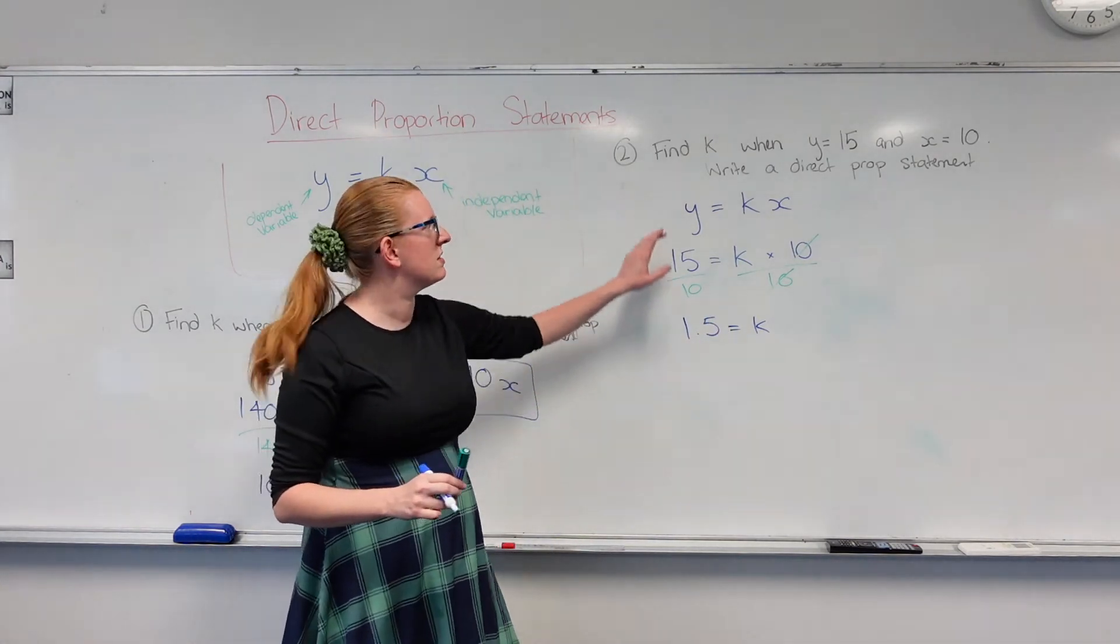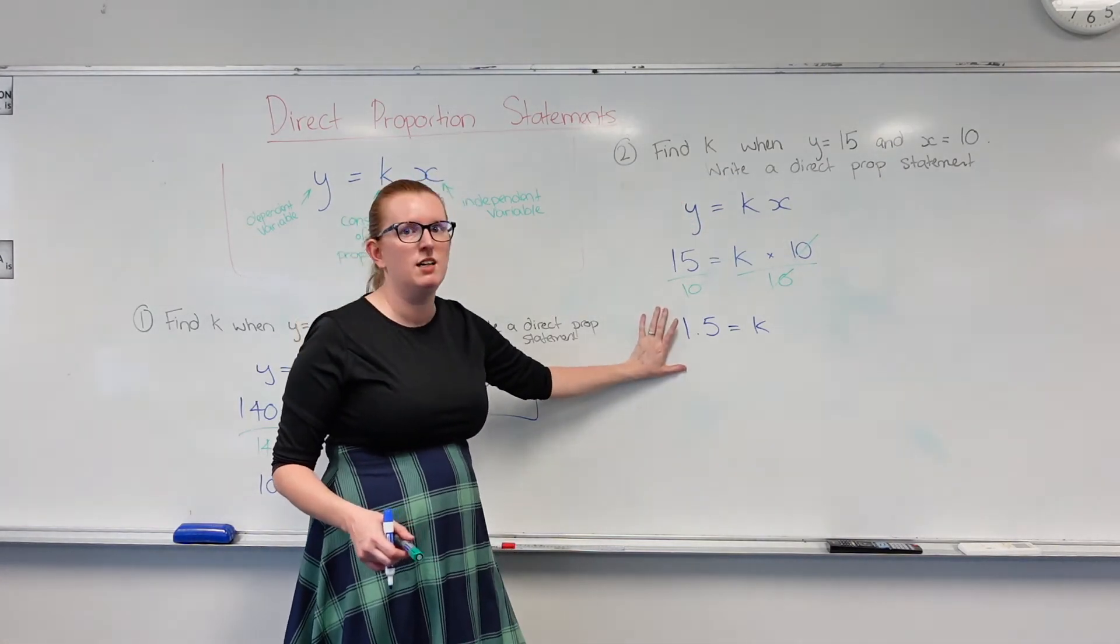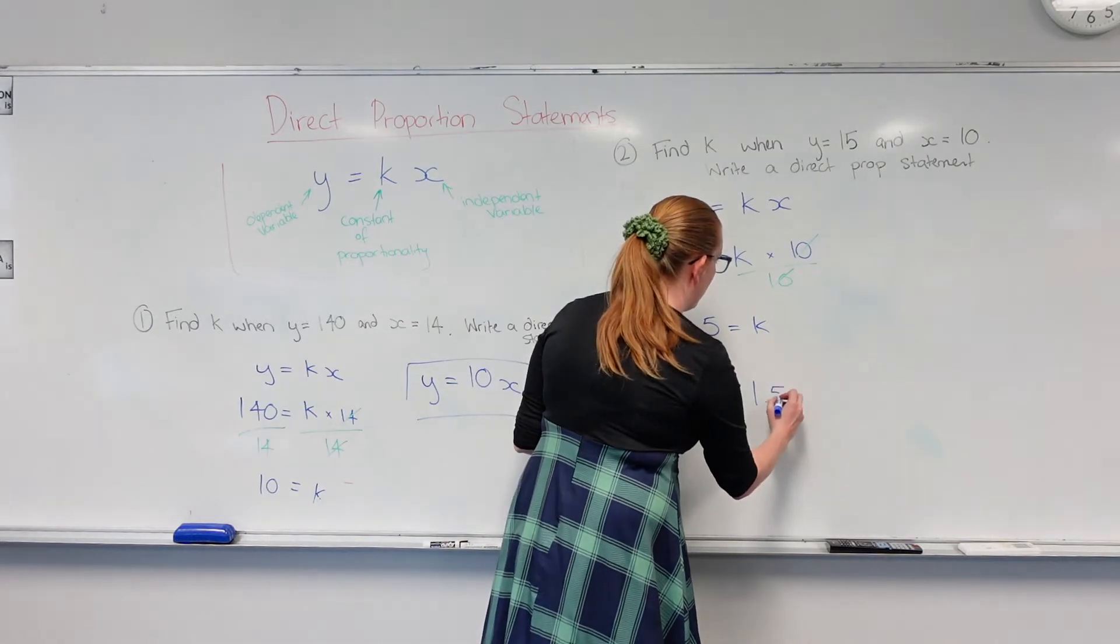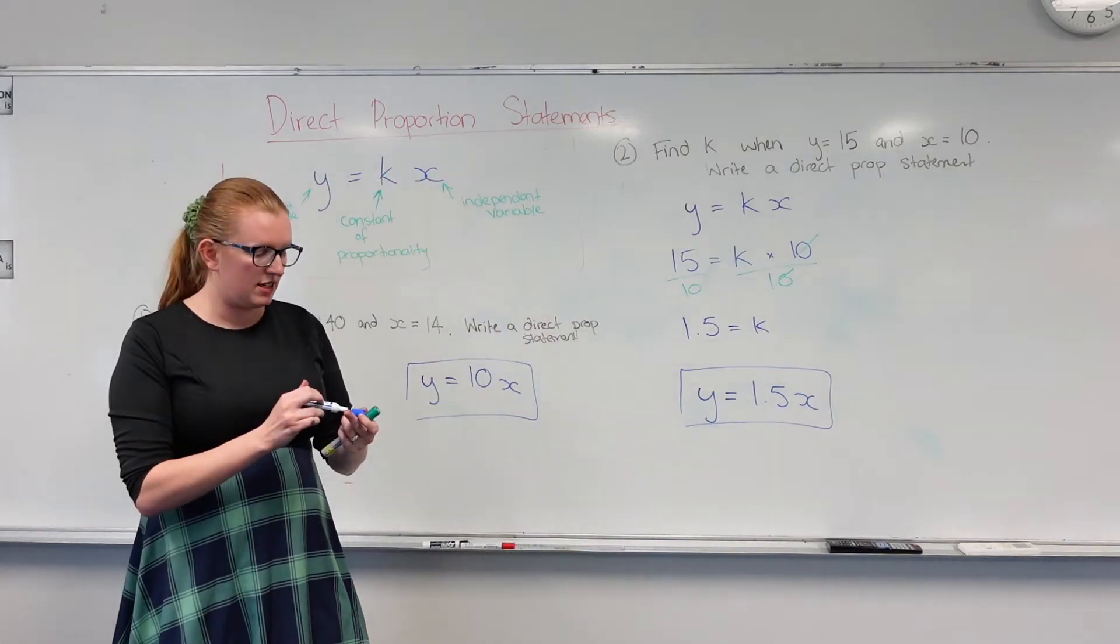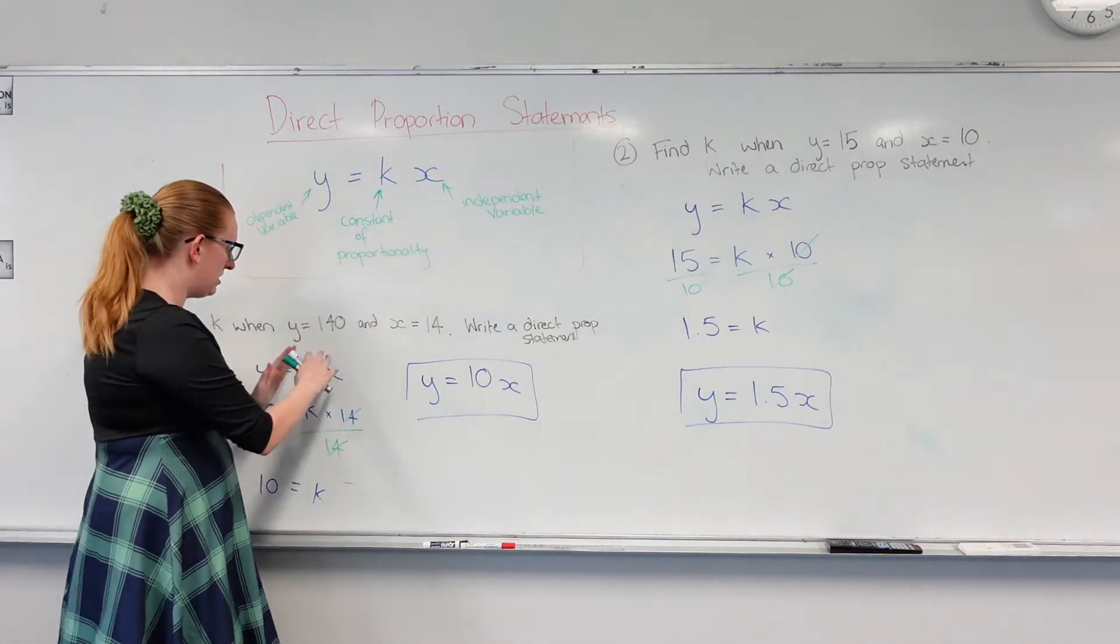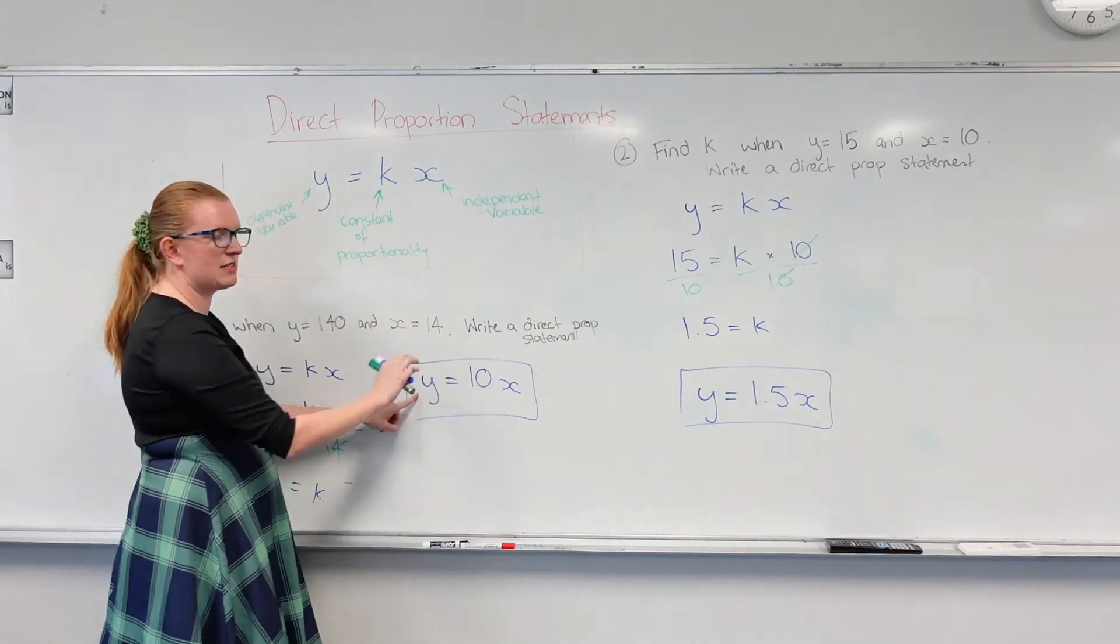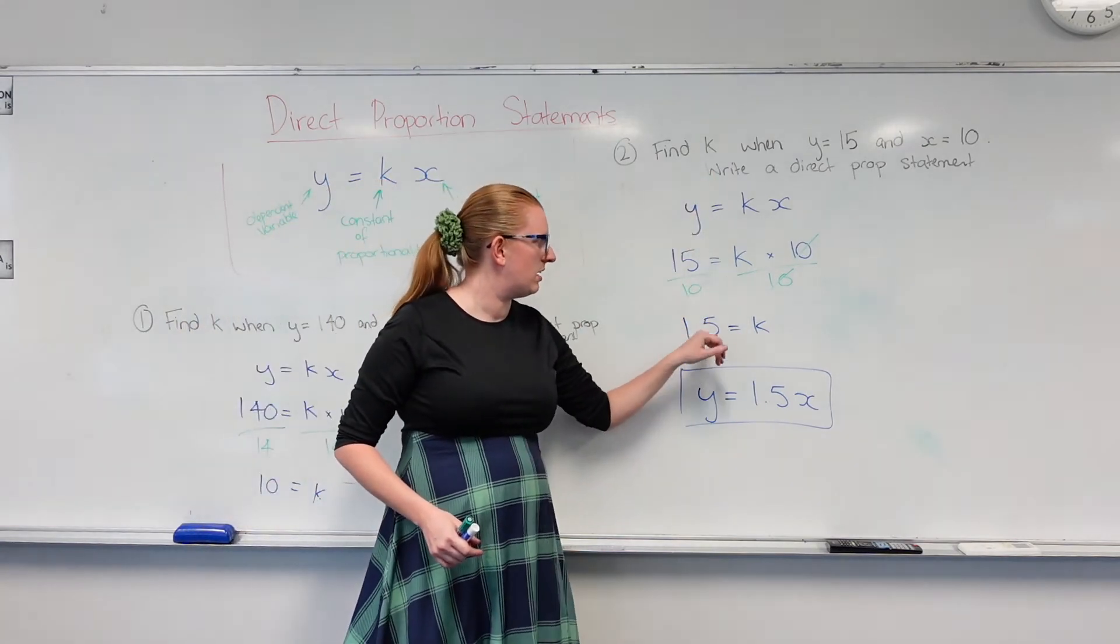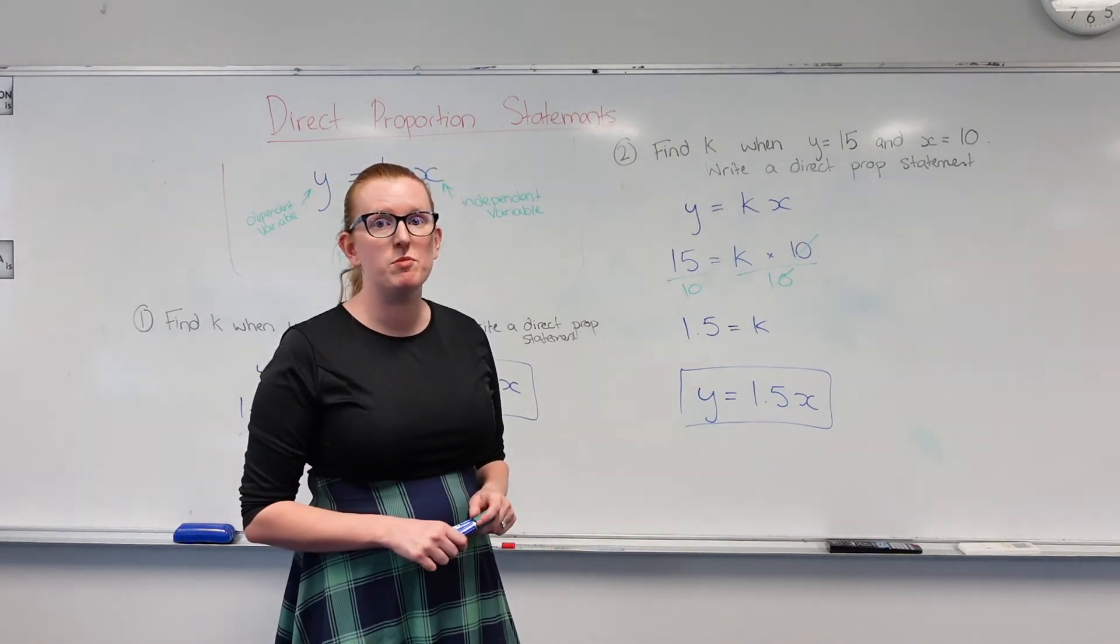But I don't stop there because the second half of my question is to write a direct proportion statement. So I take this k and I chuck it back in my formula and I leave it at that. So y equals 1.5x, and that's my final answer. So that is how we do direct proportion statements. We take our formula, sub in whatever numbers they give us till we get down to k. Then we rewrite this formula, leaving y and x as those letters, but we just put in this value for k, whatever k is equal to.